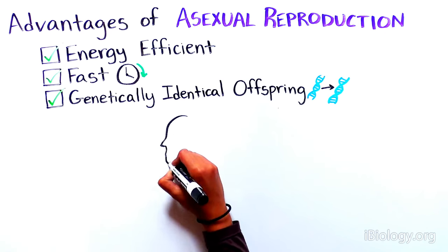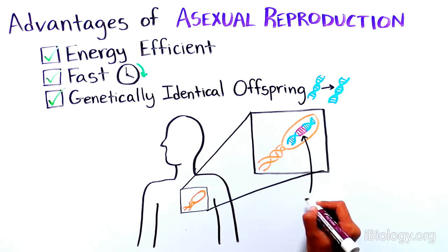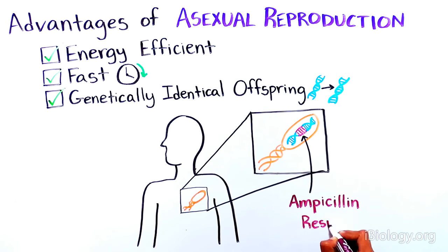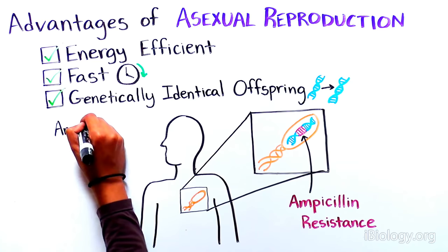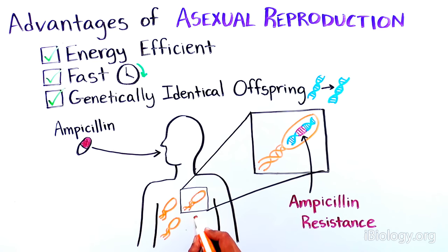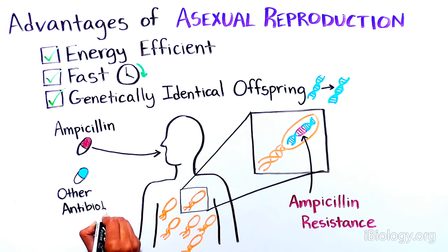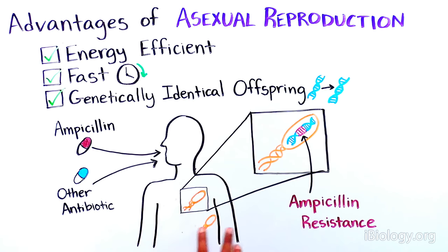For example, bacteria that carry an ampicillin antibiotic resistance gene will continue to grow in patients prescribed this antibiotic. Conversely, because asexual reproduction results in genetic clones, these bacteria would all die if the patient was treated with a different antibiotic.